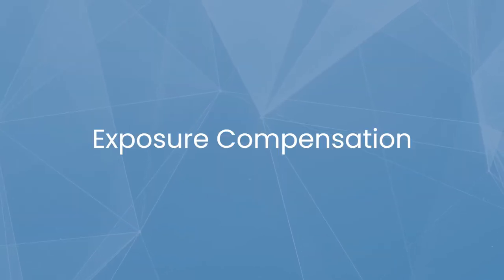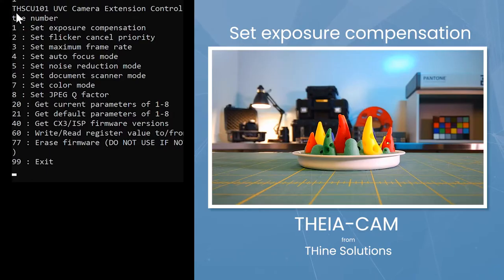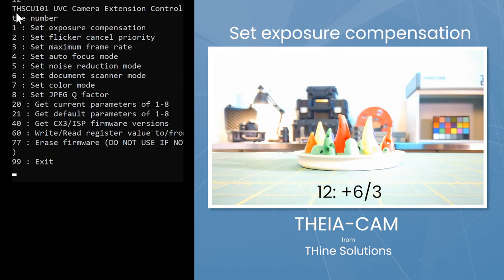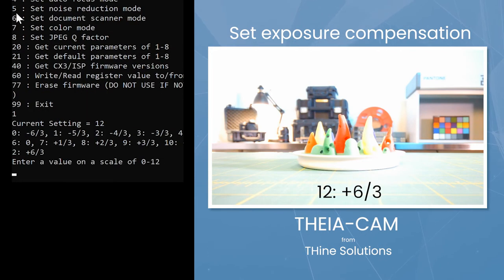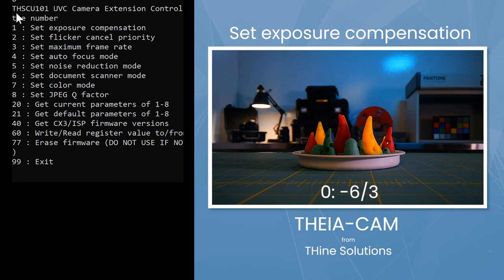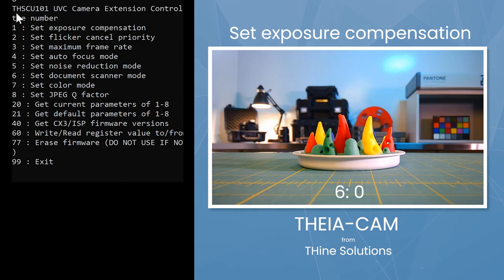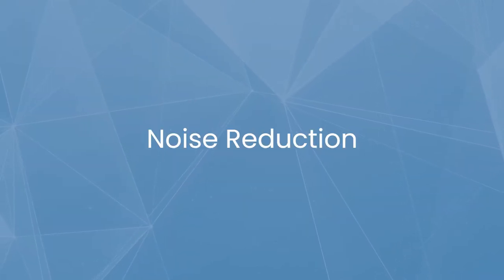Now let's look at exposure compensation. Enter 1 for exposure compensation. You will have a scale of 0 through 12. Let's enter 12. Now we will enter 0. Now let's enter 6.